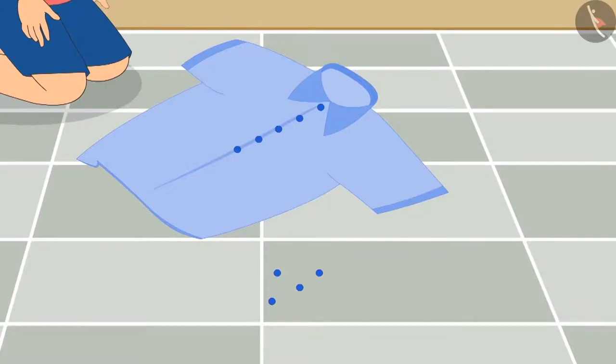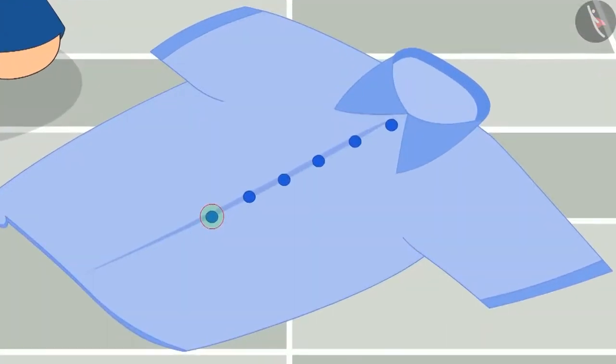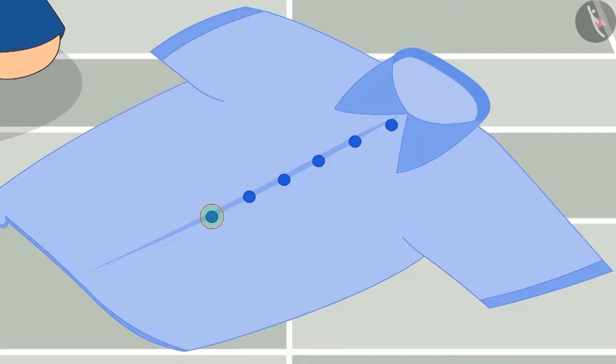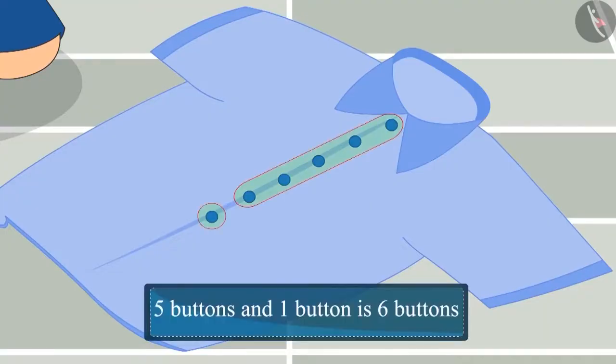Through hard work, Chutu stitched one more button after five buttons. Now think and answer, total how many buttons are stitched on Chutu's shirt. Yes, you are correct. Five buttons and one button. There are a total of six buttons stitched on Chutu's shirt.